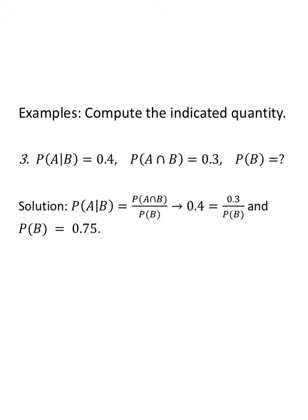If the probability of A given B is 0.4 and the probability of the intersection is 0.3, we can find the probability of B. Set up the formula: 0.4 equals 0.3 over P of B. Multiply both sides by P of B, then divide by 0.4. The probability of B is 0.3 over 0.4, which is 0.75.